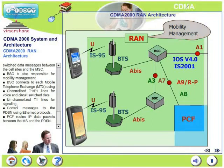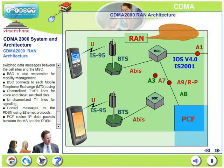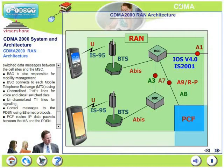BSC is also responsible for mobility management, which we will see subsequently. BSC connects to MTX using T1 or E1 lines and sends control messages to PDSN using Ethernet protocols. PCF routes IP data packets between the MS and PDSN. These are the combined responsibilities of the base station, BSC, and PCF, along with a little bit of PDSN.